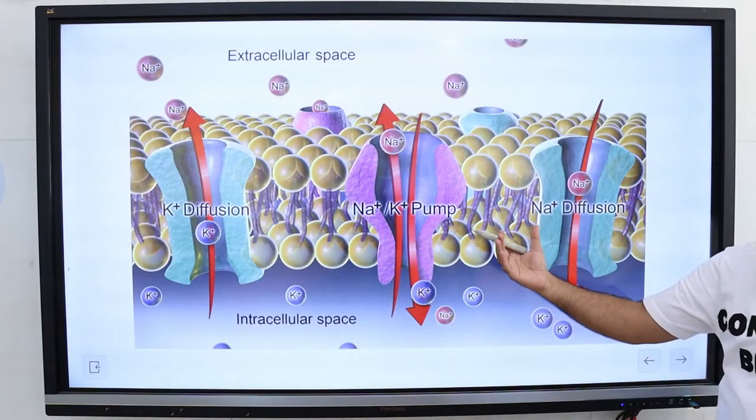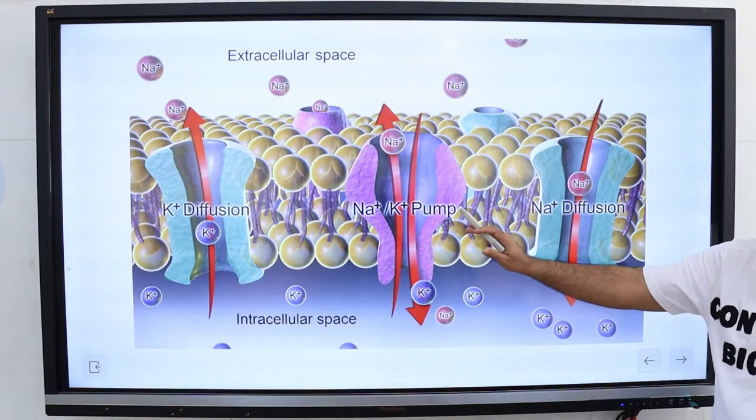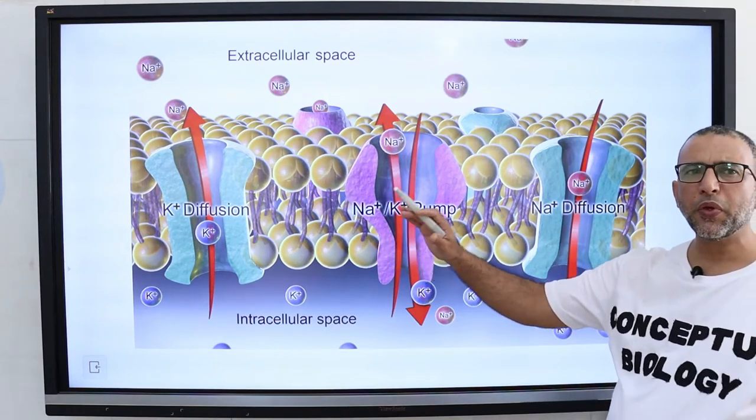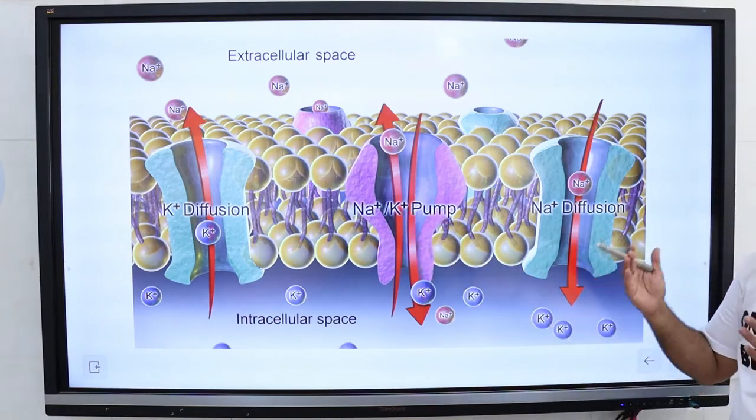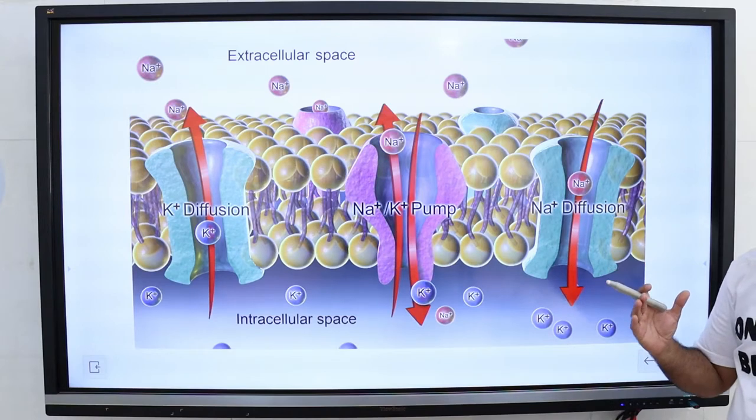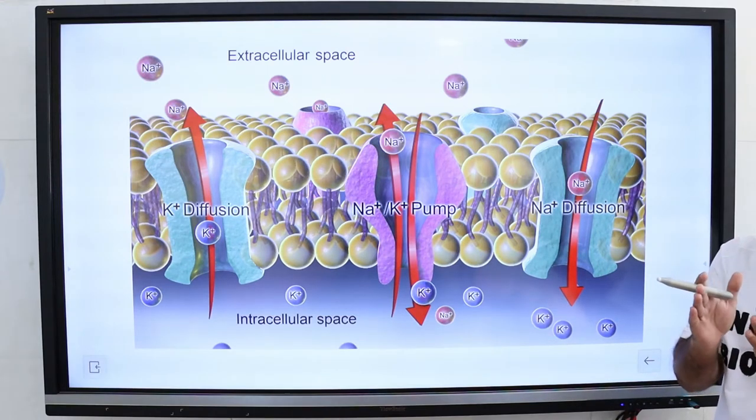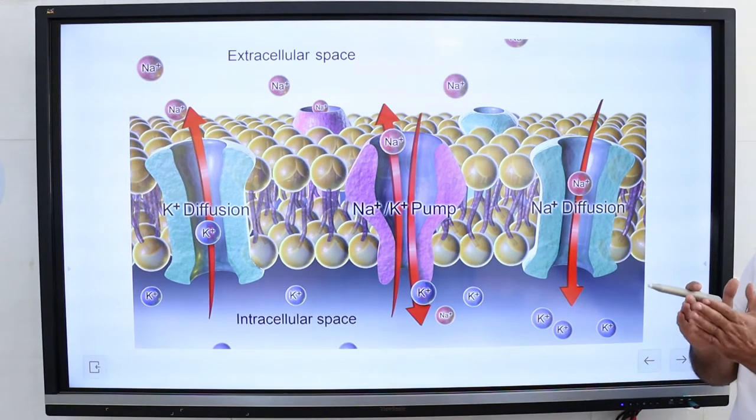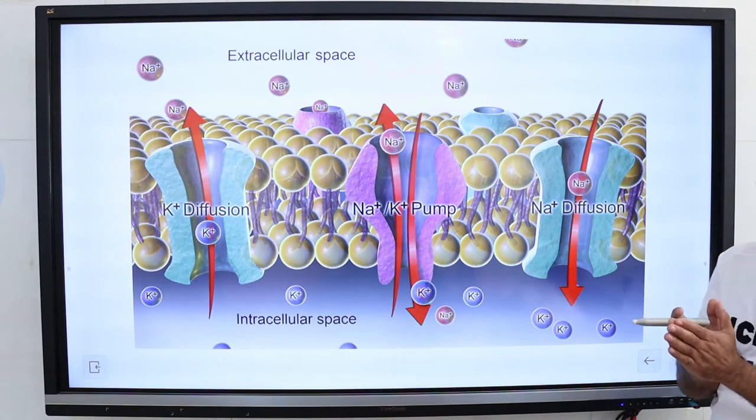As we know, the plasma membrane has sodium potassium pump, calcium pump, and carrier proteins for transport of ions and molecules. Tight junctions separate different pumps, carriers, and receptors in the plasma membrane.